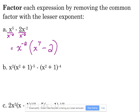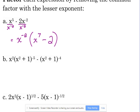That is in factored form. You can multiply it back out to check. x to the negative 2 times x to the 7th, when you're multiplying, you add exponents. Negative 2 plus 7 is 5.